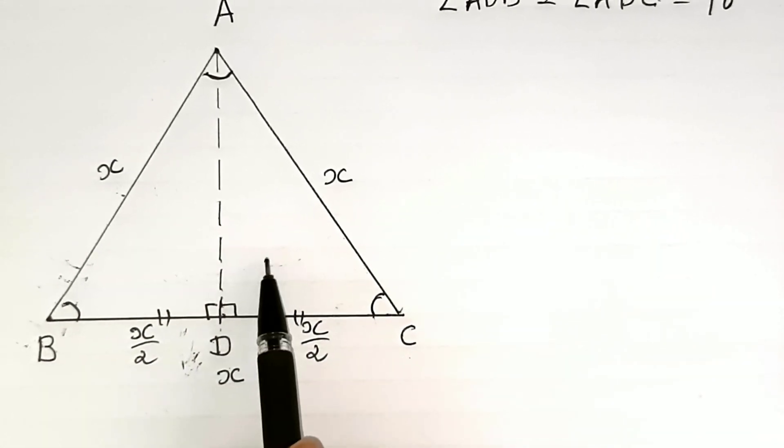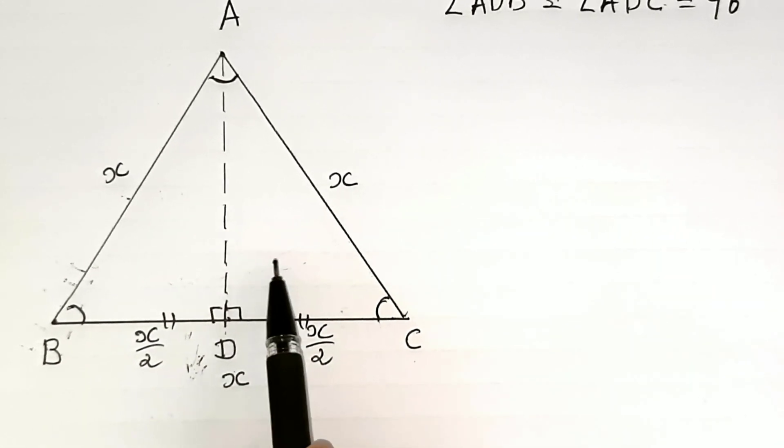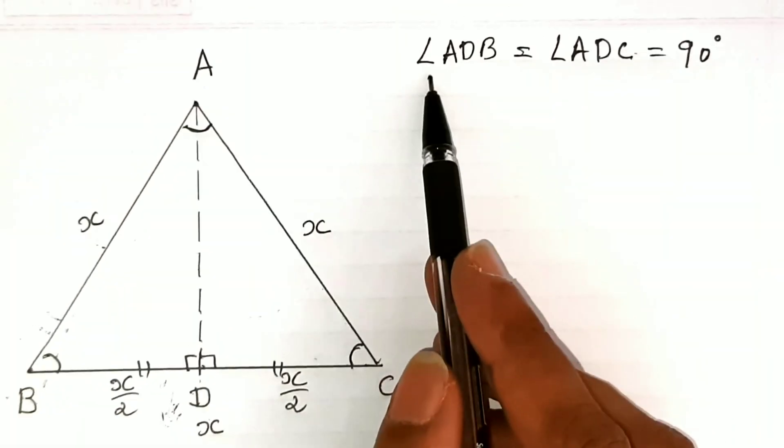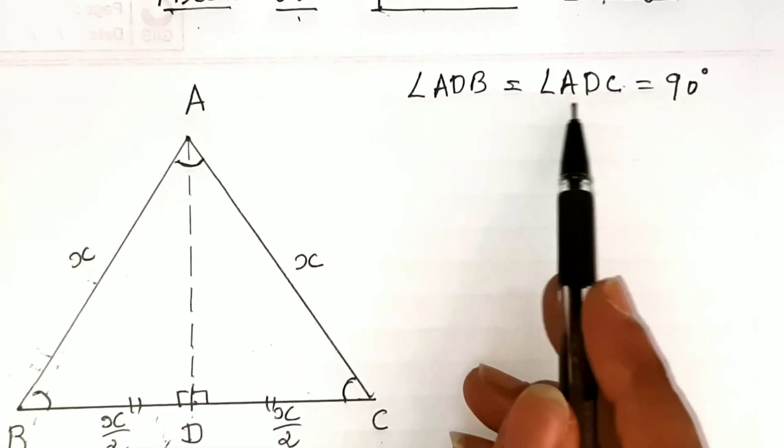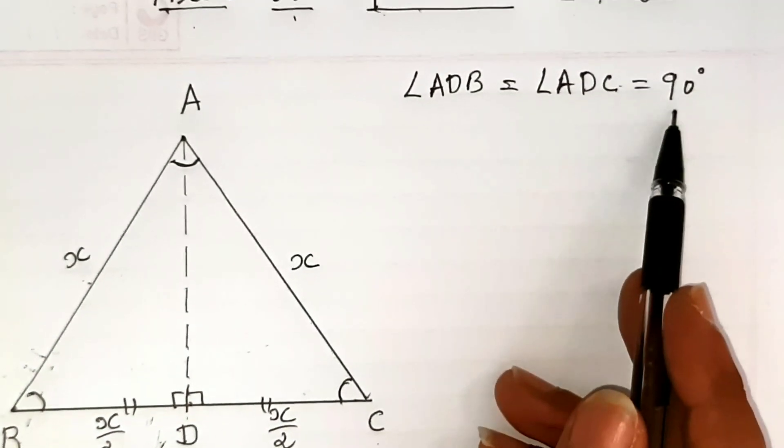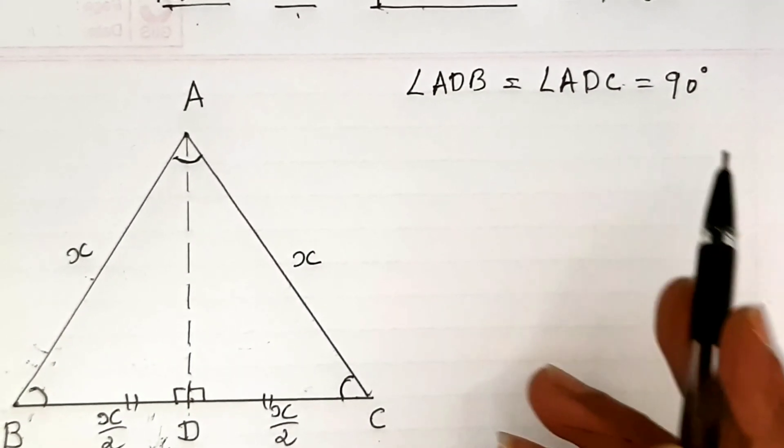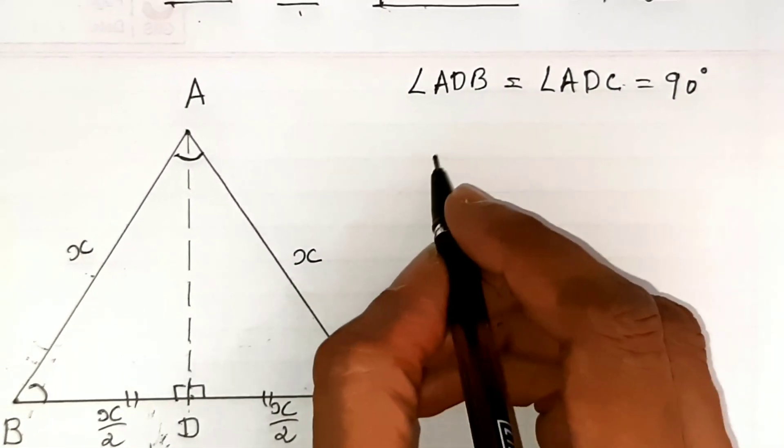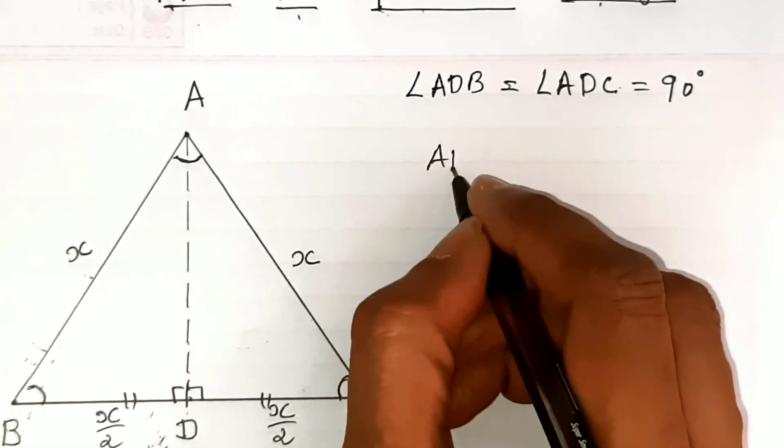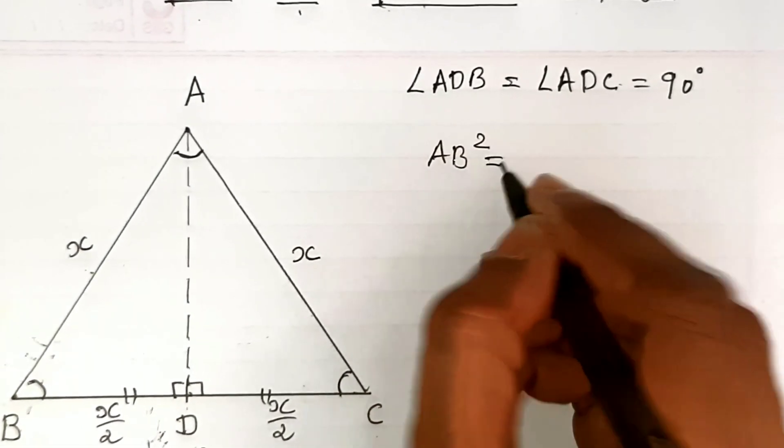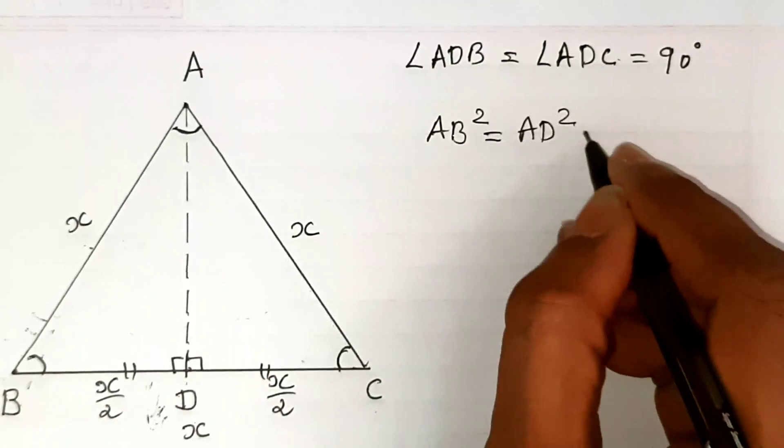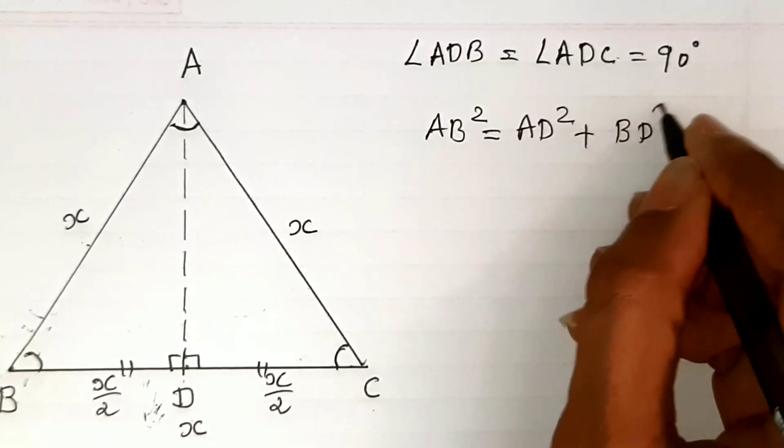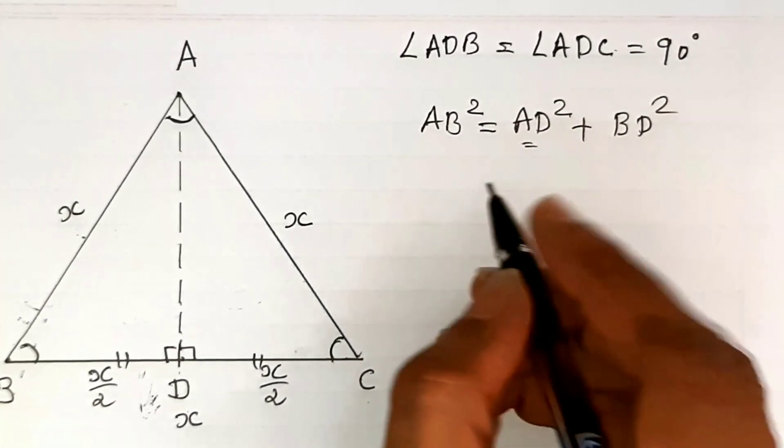This creates right angles, meaning they are congruent. Angle ADB equals angle ADC, which is 90 degrees. As per Pythagoras theorem, to find the altitude, AB squared equals AD squared plus BD squared.